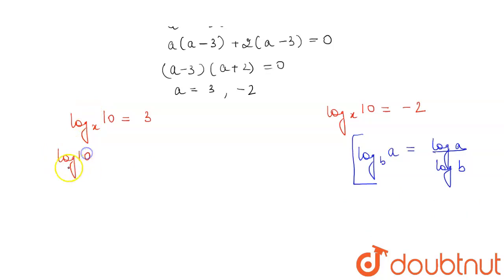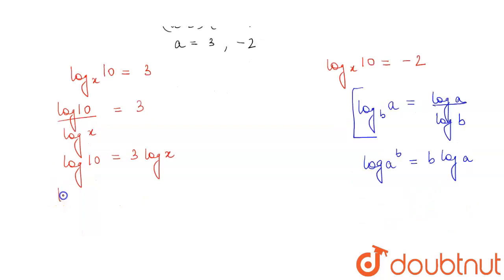So applying this here and solving this we will get log 10 divided by log x equals 3 times log x. Now we have another identity of log which says log a to the power b equals b log a. So from here we get log of 10 equals log x cube.